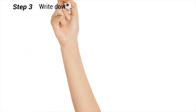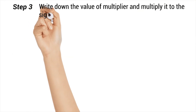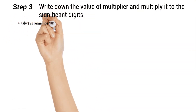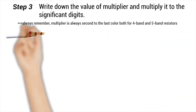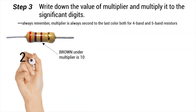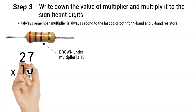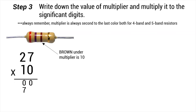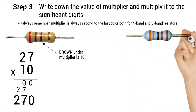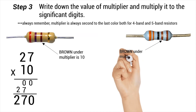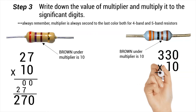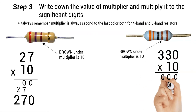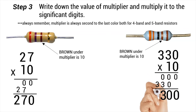Step three: write down the value of the multiplier and multiply it to the significant digits. For the four-band resistor, the value of brown under multiplier is 10. 27 times 10 is 270. For the five-band resistor, the value of brown under multiplier is 10. 330 times 10 is 3,300.